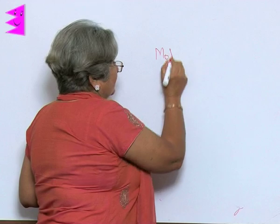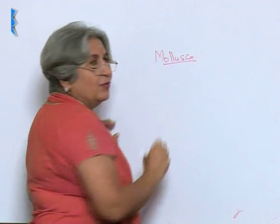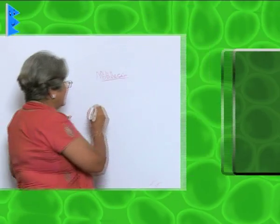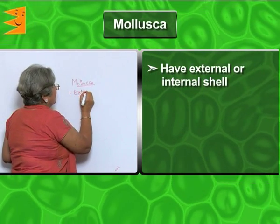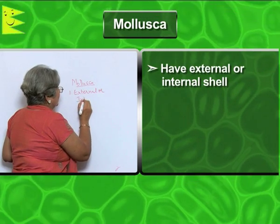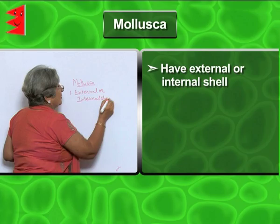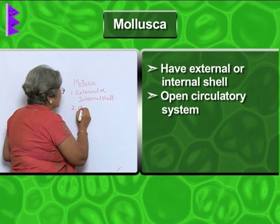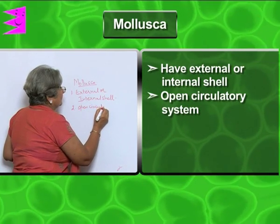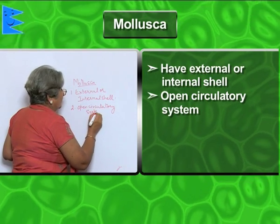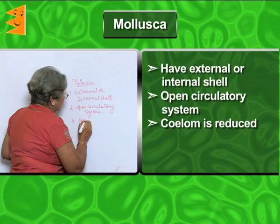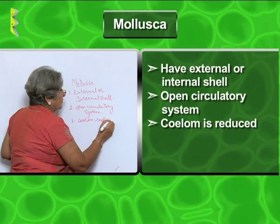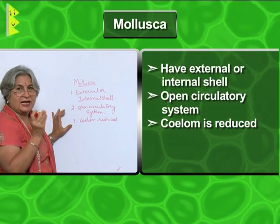The most fascinating thing is the shells. What are these shells? They are actually animals, and they belong to the group Mollusca. The most important feature of Mollusca is that they have an external or internal shell. The shell is made up of calcium carbonate. They have an open circulatory system, and for their movement they have a muscular foot.